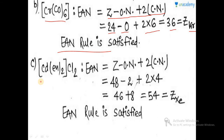For the cadmium ethylenediamine complex, the EAN of cadmium is calculated as: atomic number minus 2, plus 2 times the coordination number. Ethylenediamine is a bidentate ligand, so it contributes through 2 nitrogen atoms per ligand, giving 2 × 4 = 8 electrons from 4 attachment points of nitrogen. The total gives 46 + 8 = 54, which is the atomic number of xenon. So this complex also satisfactorily obeys the effective atomic number rule and is a stable one.